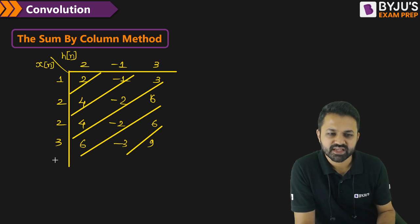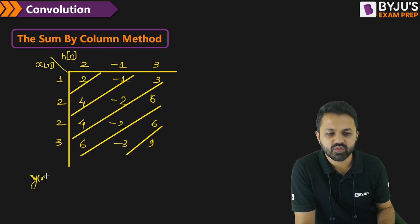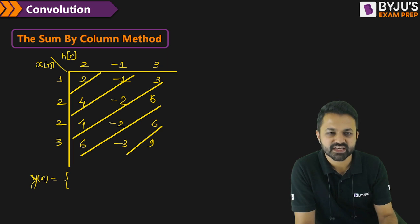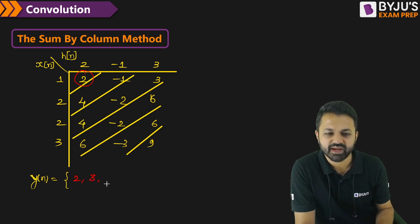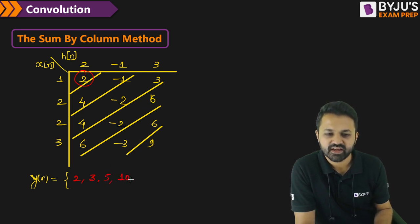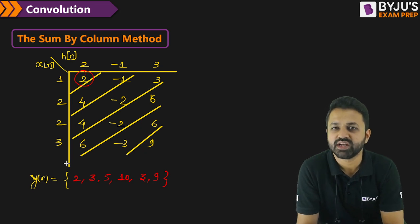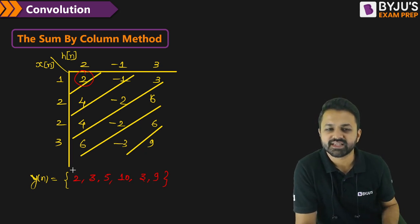So how do you add them? The addition gives y of n. This is 2, then 4 minus 1 is 3, then 4 plus 3 is 7 minus 2 is 5, then 6 plus 6 is 12 minus 2 is 10, then 6 minus 3 is 3, and finally 9. So this is the shortcut method to calculate the convolution between two discrete signals.